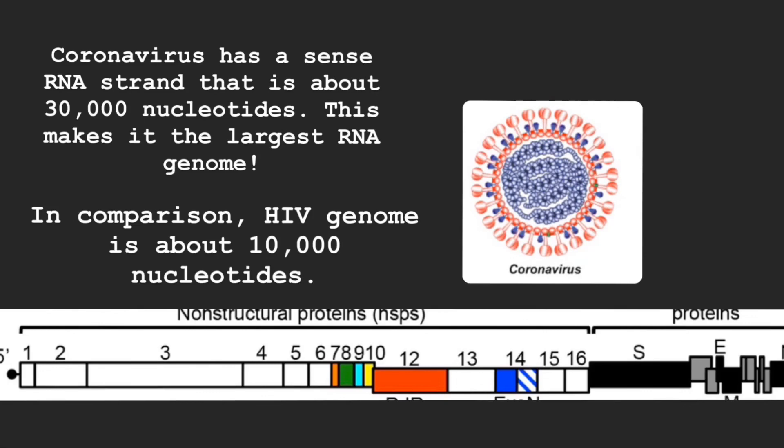In comparison, the HIV genome is about 10,000 nucleotides. The coronavirus genome, similar to other viruses, encodes structural and non-structural proteins. To pack as much information into a small virion, coronavirus uses frame-shifting to encode proteins, as shown by the boxes that are slightly off-leveled in the figure below.